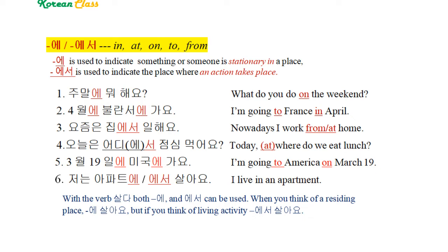Number 5: 3월 19일에 미국에 가요. (I'm going to America on March 19th.) Number 6: 저는 아파트에 살아요 and 아파트에서 살아요. With the verb 살다, both 에 and 에서 can be used. When you think of a residing place: 에 살아요. But if you think of a living activity: 에서 살아요. So again: 저는 아파트에 살아요, or 저는 아파트에서 살아요.